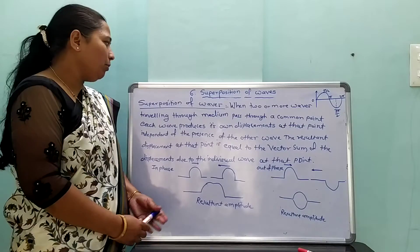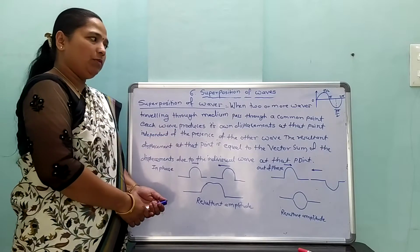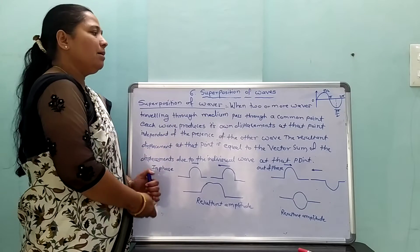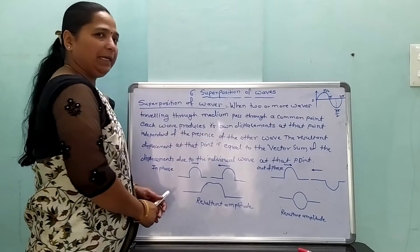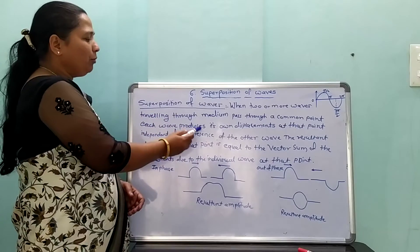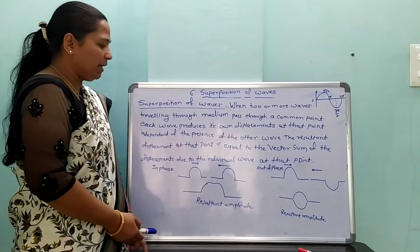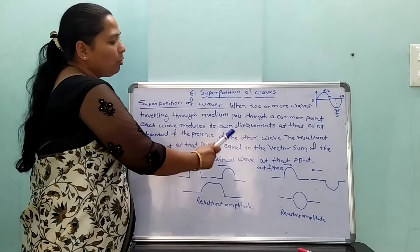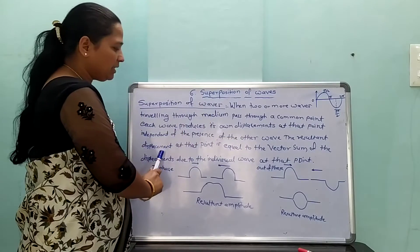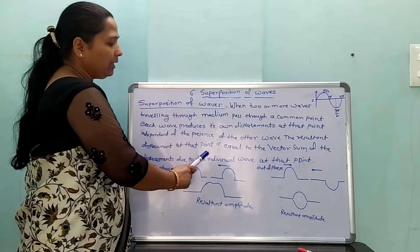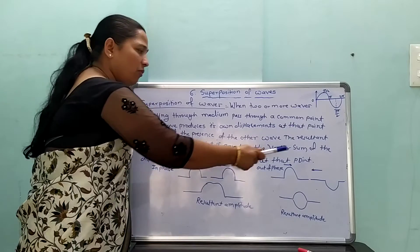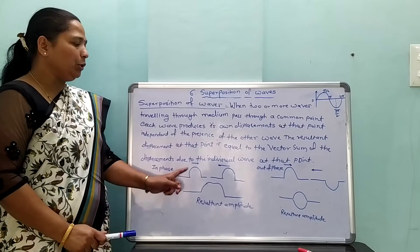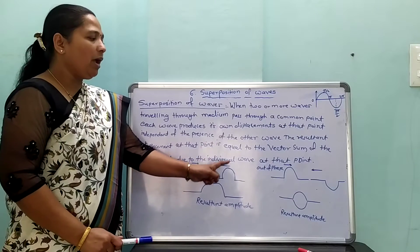Hello students. We study about superposition of waves. When two or more waves traveling through a medium pass through a common point, each wave produces its own displacement at that point, independent of the presence of the other wave. The resultant displacement at that point is equal to the vector sum of displacements due to the individual waves at that point.